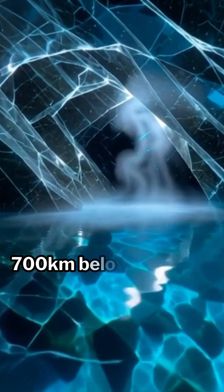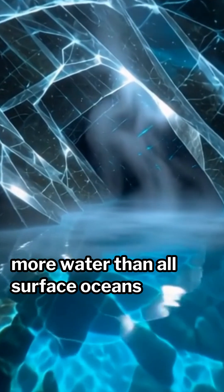700 kilometers below the Earth, there is an ocean with three times more water than all surface oceans combined.